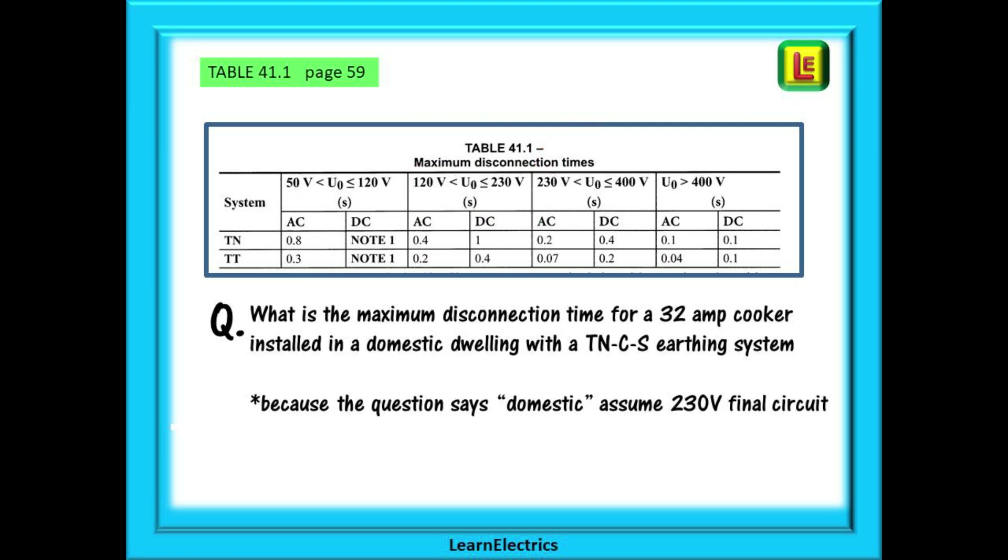A typical exam question might ask: what is the maximum disconnection time for a 32 amp cooker circuit installed in a domestic dwelling with a TNCS earthing system? Because the question says domestic, we assume that this is a 230 volt AC final circuit. Find the column 120 volts to 230 volts at the top. Find AC. We know it is TNCS, so find the row TNCS, and where the two cross is our answer. 230 volts TNCS and our maximum disconnection time should not exceed 0.4 seconds.